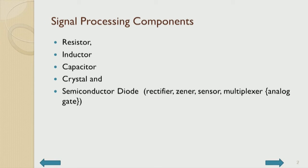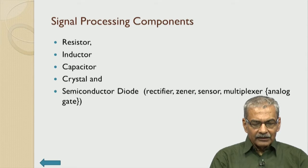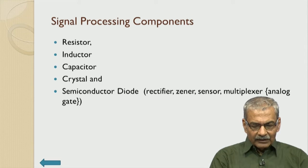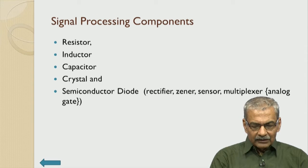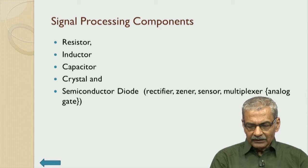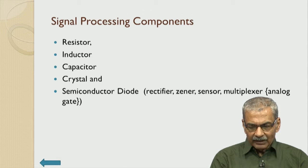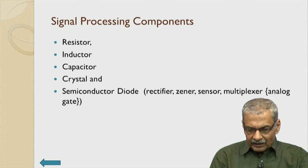The passive devices covered were primarily resistor, inductor, capacitor, crystal, and semiconductor diode. We saw what commercial components are available, their specifications, and how to design simple applications. We covered rectifier, Zener applications, sensor applications, and multiplexer — an analog gate — as an important application of the diode.